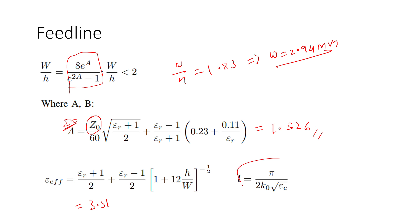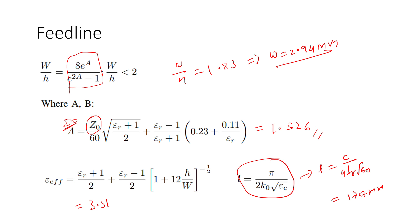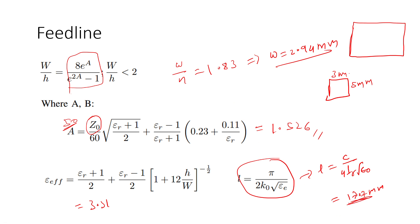Substituting ε_effective = 3.31, the length of the feed line is L = c / (4·fr·√ε_eff) = 17.7 mm. Those who followed the previous video may note that there the feed line dimensions were taken as 3 mm × 5 mm. Reducing the feed line length is acceptable practice since frequency is only affected by the length and width of the rectangular patch itself, not the feed line. So you can keep it at 17.7 mm or use 5 mm as in the previous video.